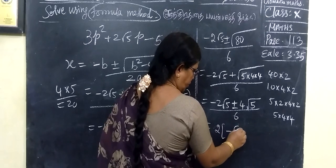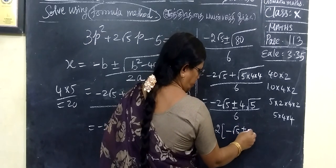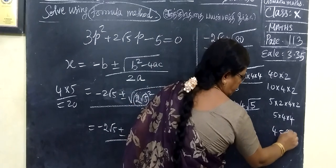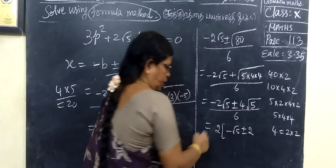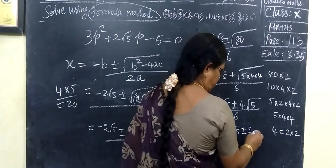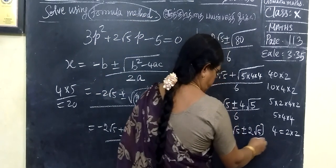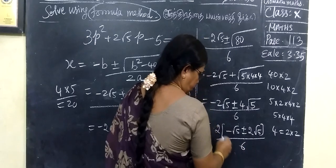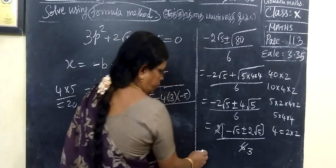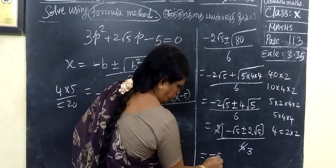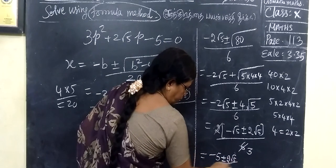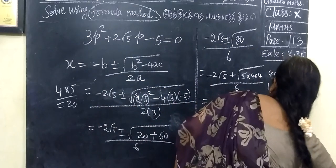If you combine it: minus root 5 plus or minus. This is 2 because root 4 equals 2. So, this is 2 into 2. Taking 2 outside, 1 and 2 will be left. Here root 5, here 6 will cancel. So, the answer is minus 5 plus or minus 2 root 5 by 3.